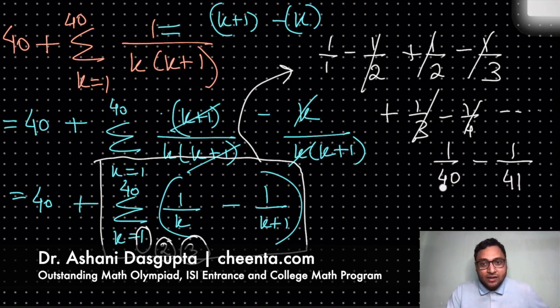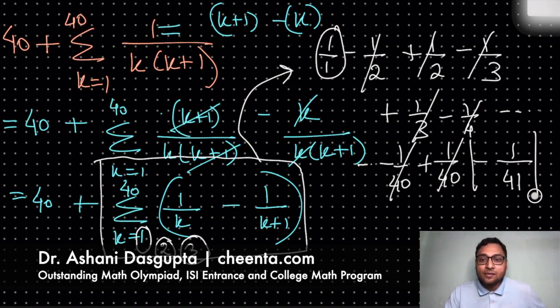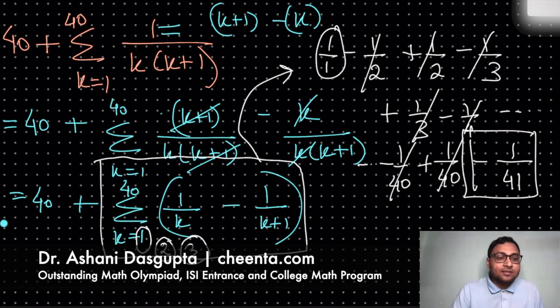Because the last one was 1 by 40 minus 1 by 41. 1 by 40 will cancel off from the previous step. So we will be left with 1 minus 1 by 41. So this particular piece right here is 1 minus 1 by 41.